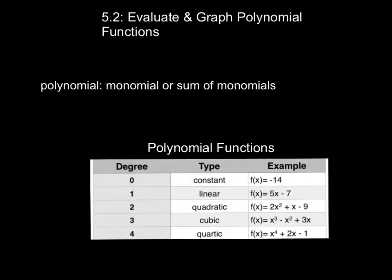So 5.2 is evaluate and graph polynomial functions. Now a polynomial is a monomial or sum of monomials, and this will become more clear in our table here of polynomial functions. The first has a degree of 0. A degree being, as we know, x to the second has 2 degrees, x is just 1 degree, x to the third is 3 degrees. So the first type is constant, and it's just that, a constant. The second is linear with 1 degree, then quadratic, then cubic, then quartic.